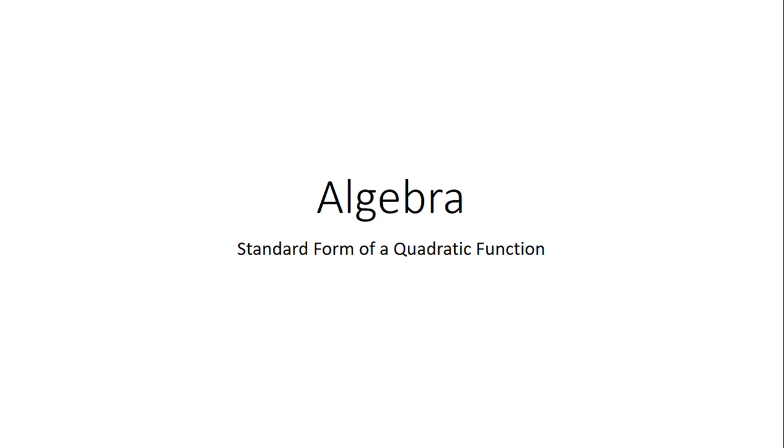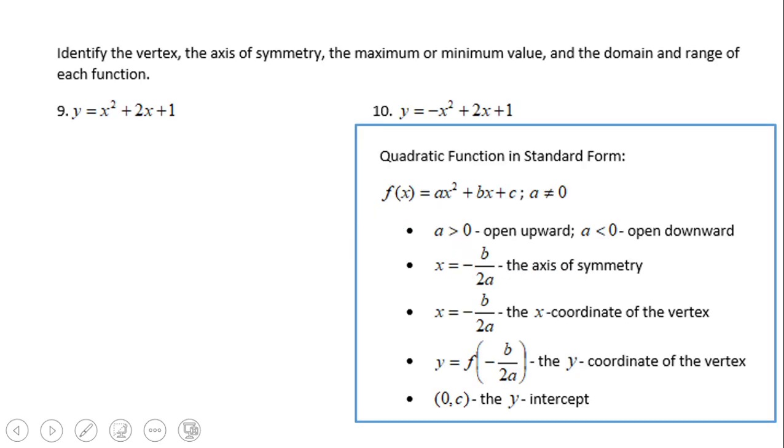Welcome or welcome back on C-Square. In this video clip we're going to talk about standard form of a quadratic equation. First of all, I want you to take a look on the right side of the screen. This is a summary of a quadratic function in the standard form. Quadratic function is nothing else than f of x equals ax squared plus bx plus c, where a has to be different than zero.